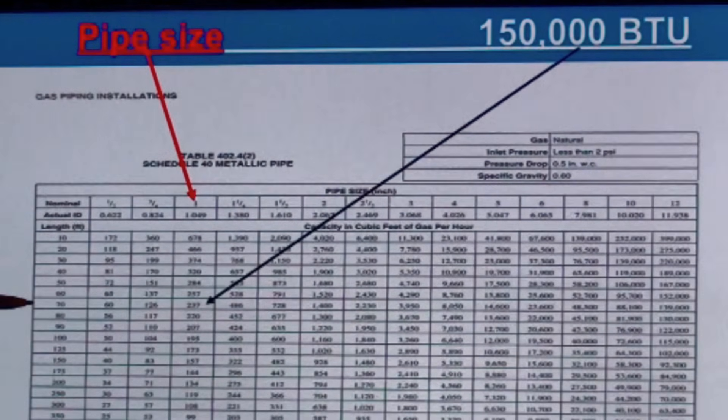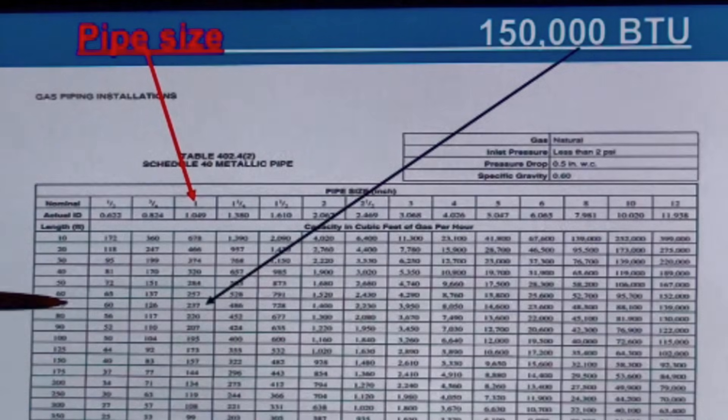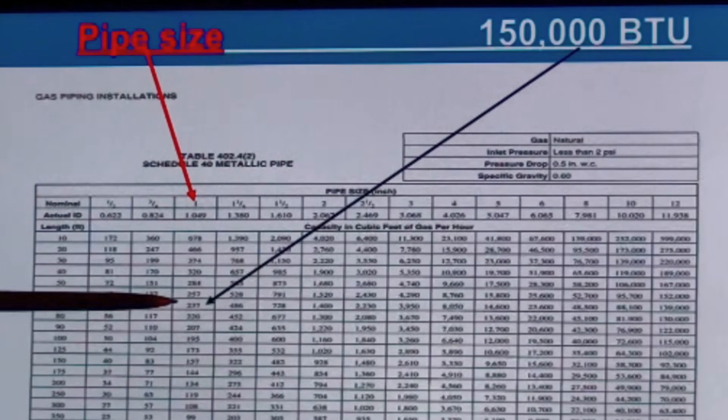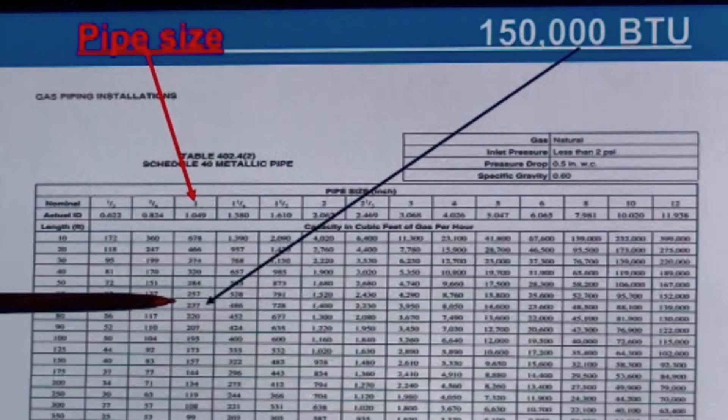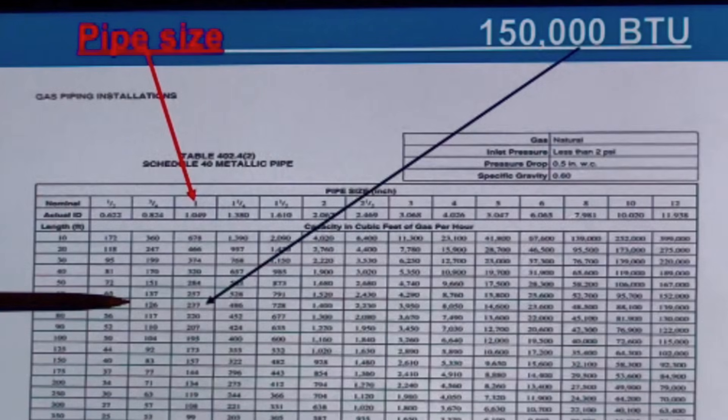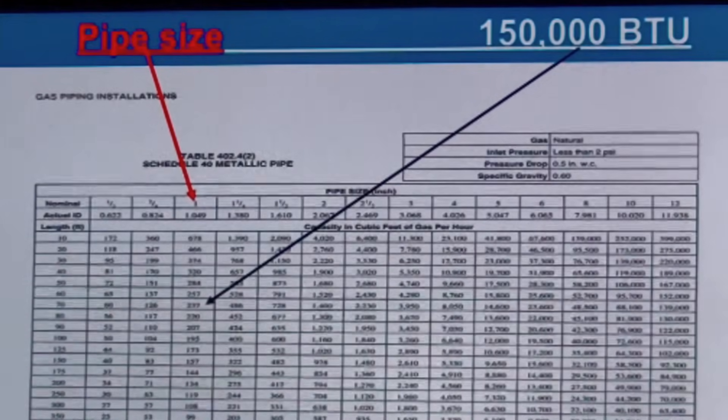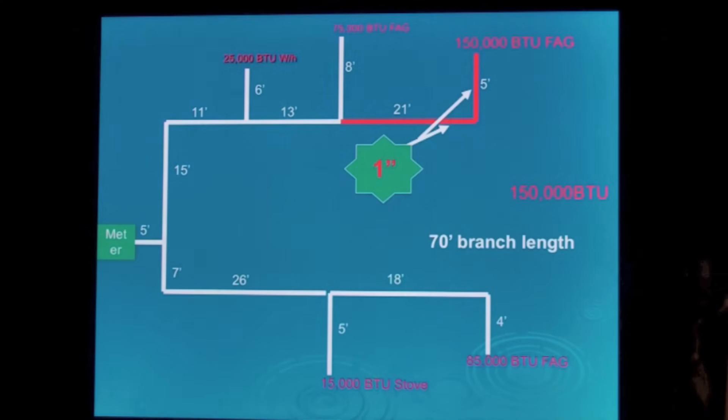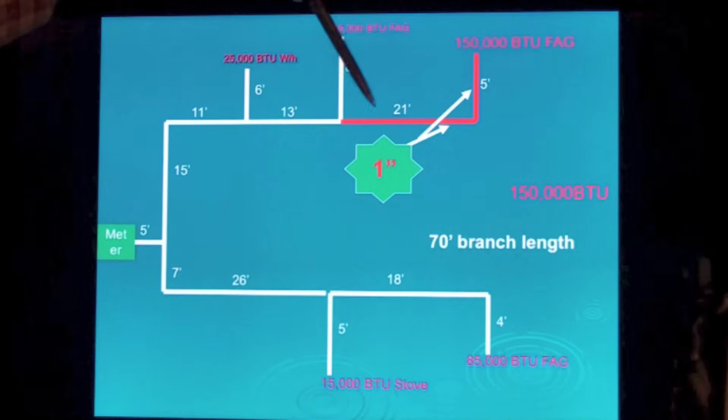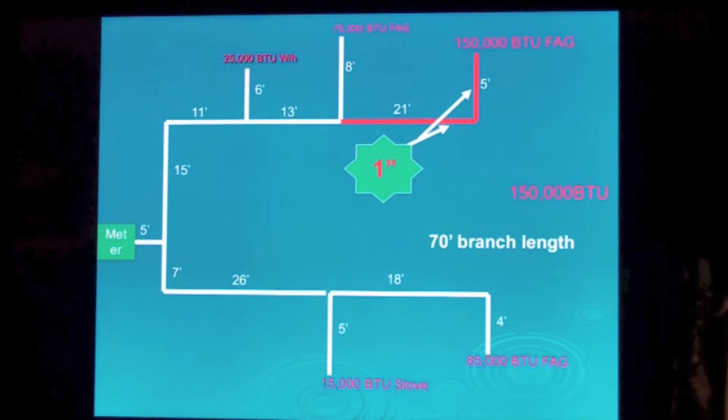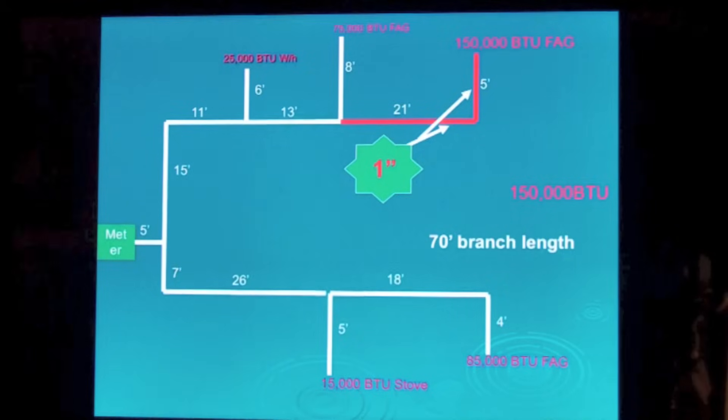So we go back here, 70 foot again. 237 for one inch. But we have 150. If we go to three quarters, it's 126. So we're going to have to go with one inch pipe. One inch pipe for here to here and for the drop.